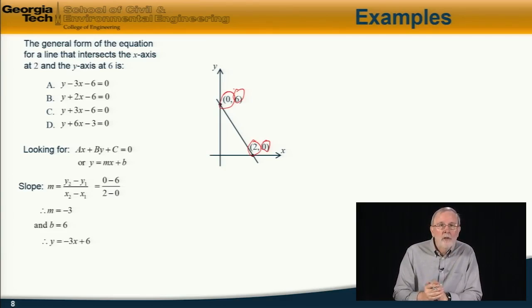And rewriting that in standard form, we have y + 3x - 6 = 0. So, the answer is c. And this concludes our discussion of straight lines.